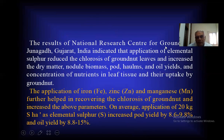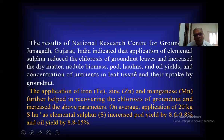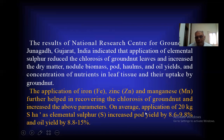The results of the National Research Centre for Groundnut, Junagadh, Gujarat, India indicate that application of elemental sulfur reduced the chlorosis of groundnut leaves and increased the dry matter, nodule biomass, pod yield, haulm yield, oil yield, and concentration of nutrients in leaf tissue and their uptake by groundnut. The application of iron, zinc, and manganese further helped in recovering the chlorosis and increasing the above parameters. On average, application of 20 kg sulfur per hectare as elemental sulfur increased pod yield by 8.6–9.8% and oil yield by 8.8–15% in groundnut.